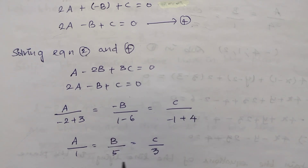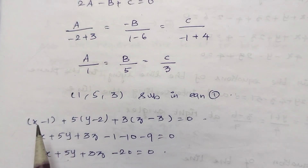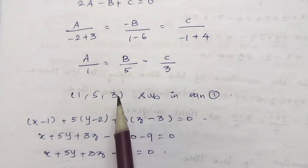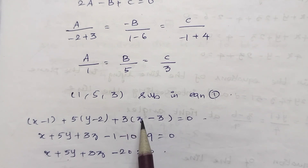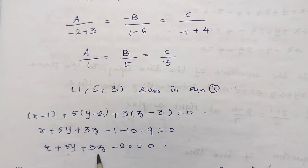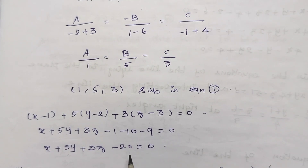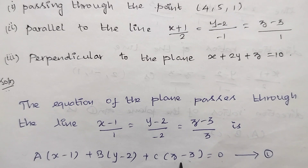These direction ratios 1, 5, 3 are substituted into equation 1: 1(x-1) + 5(y-2) + 3(z-3) = 0. This gives the required plane equation for Subdivision 2.